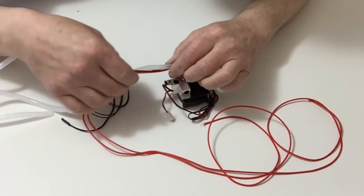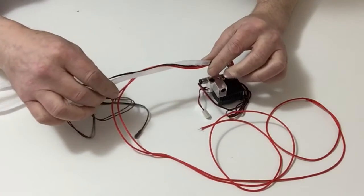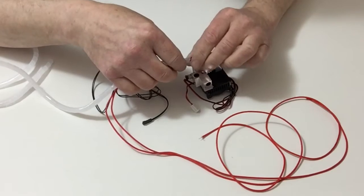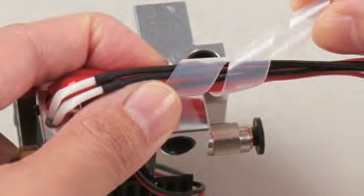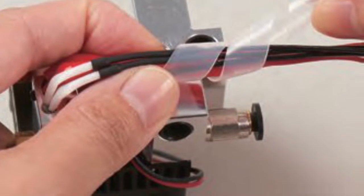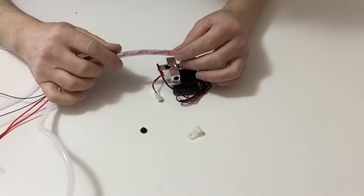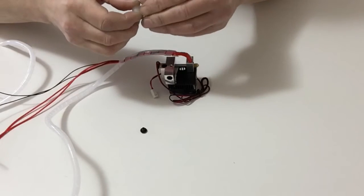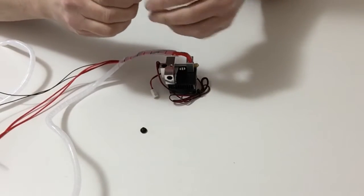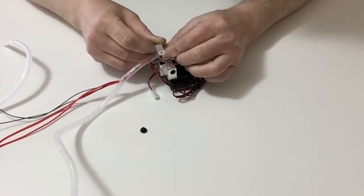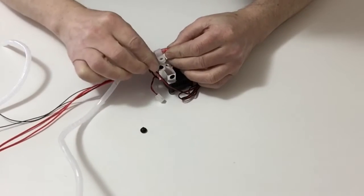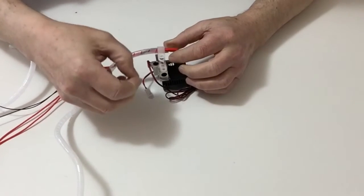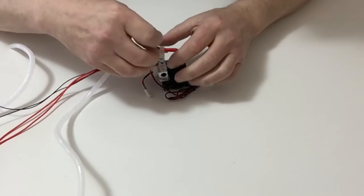Continue for about five or six inches and then stop there. Once you've done that, take your cable clamp and push that over the end of the cable like so, and then take the M4 truss head screw.